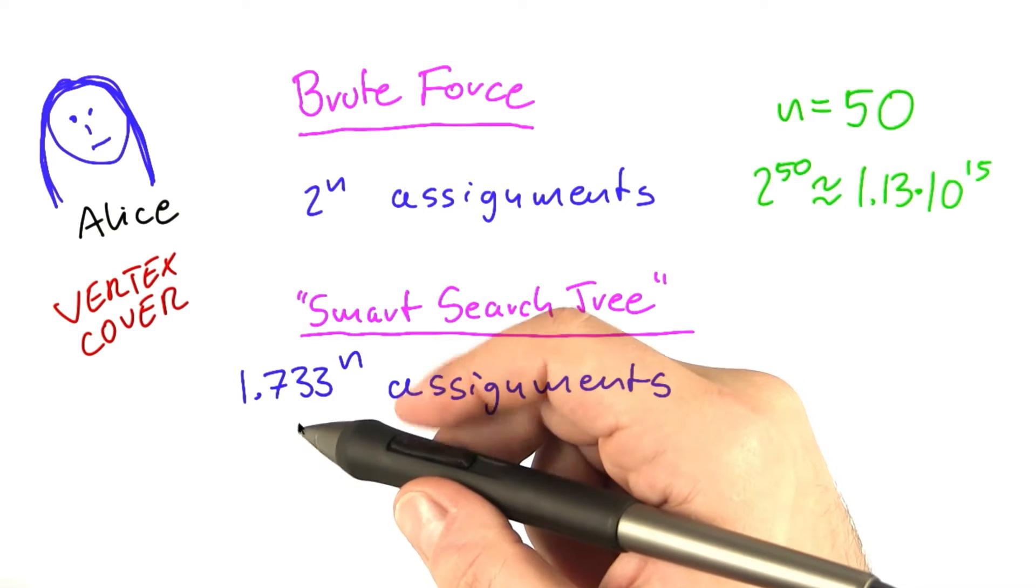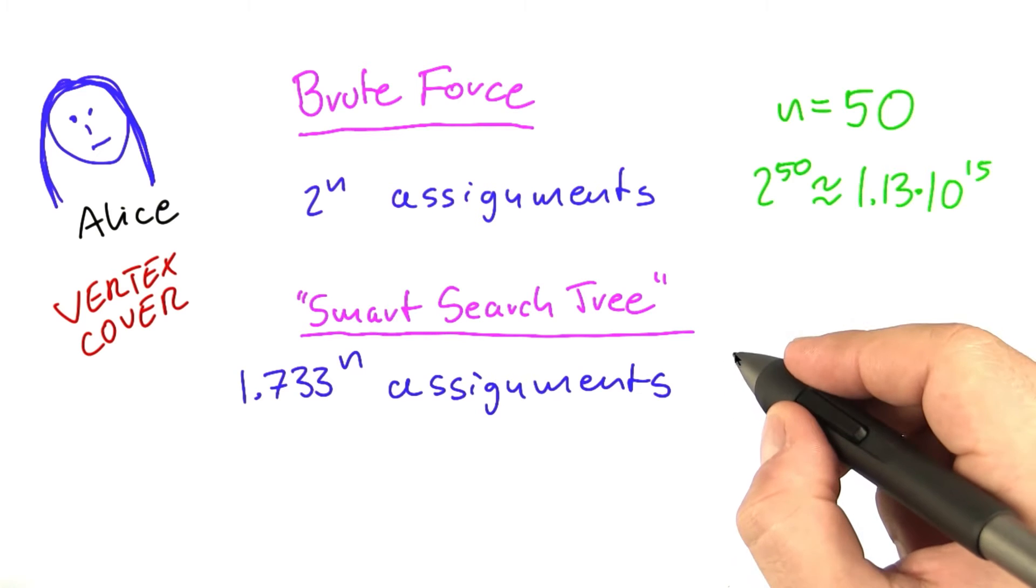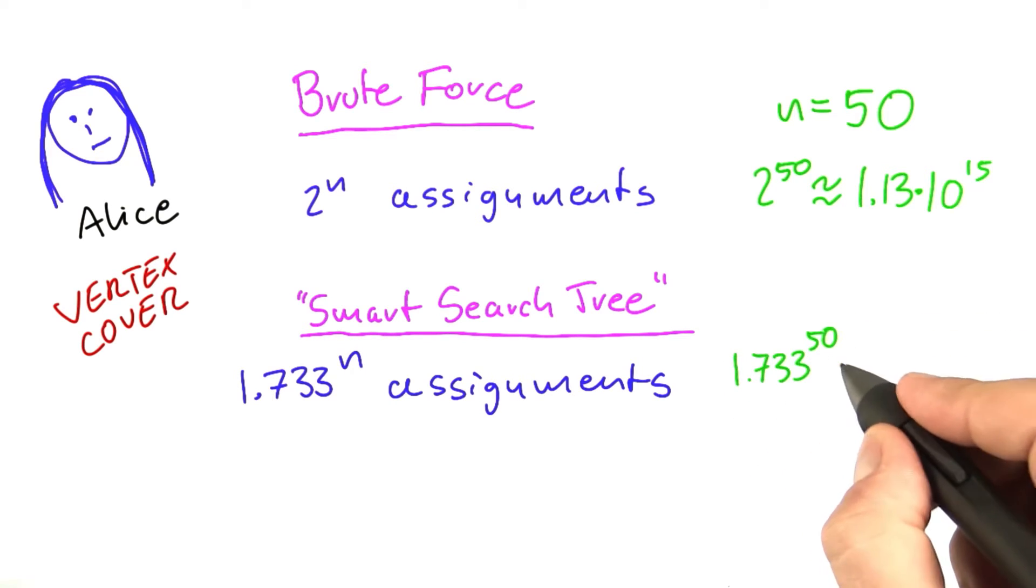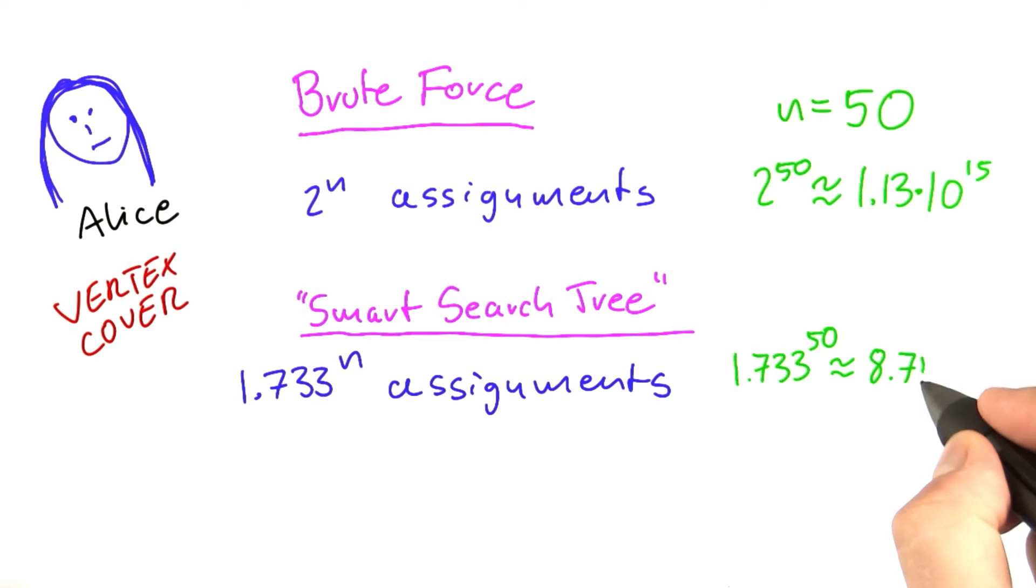If, however, you have the smarter search tree, then you have 1.733 to the power of n, which is 1.733 to the power of 50. And that is about 8.71 times 10 to 11. And the difference here is a speedup of over 1,000.